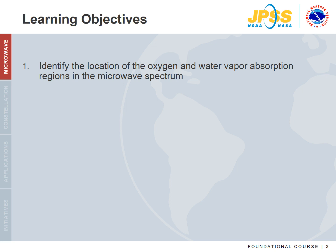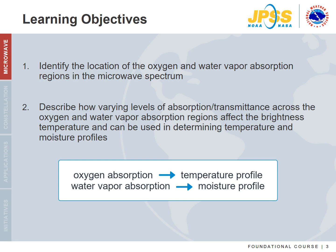The learning objectives are: one, to identify the location of the oxygen and water vapor absorption regions in the microwave spectrum; and two, to describe how varying levels of absorption and transmittance across the oxygen and water vapor absorption regions affect brightness temperature, and can be used in determining temperature and moisture profiles.